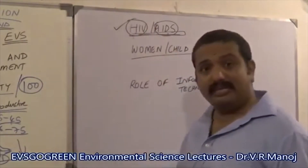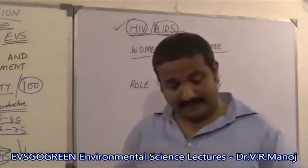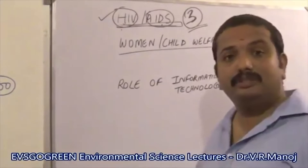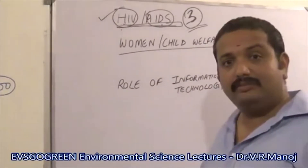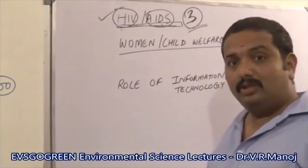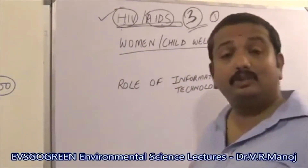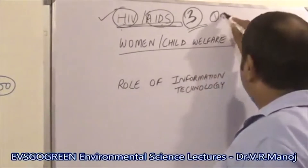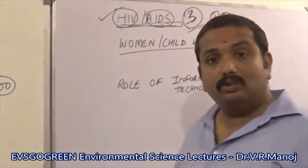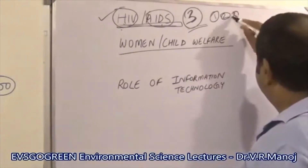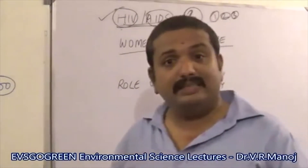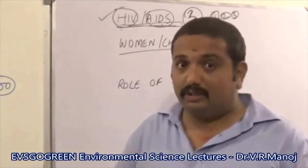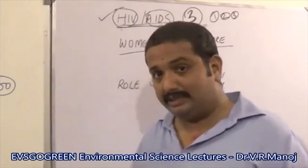Be very clear about where HIV is coming from and its three major modes of transmission. Number one is unprotected sexual intercourse with an infected person. Number two is through blood transfusions. And number three is through transplacental transmission from an infected mother to the unborn child.